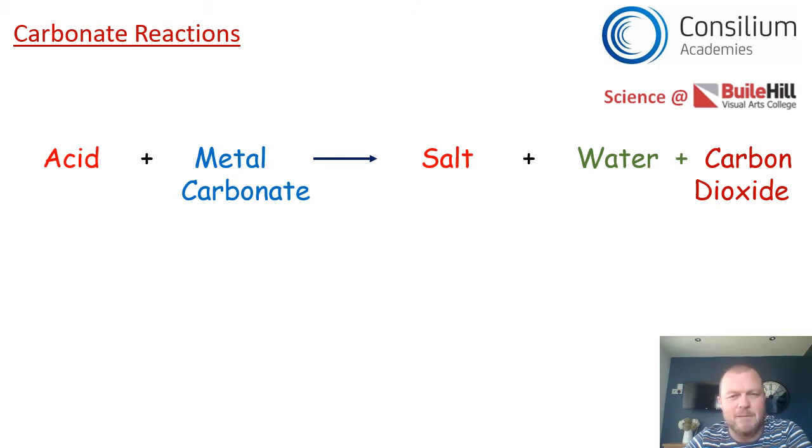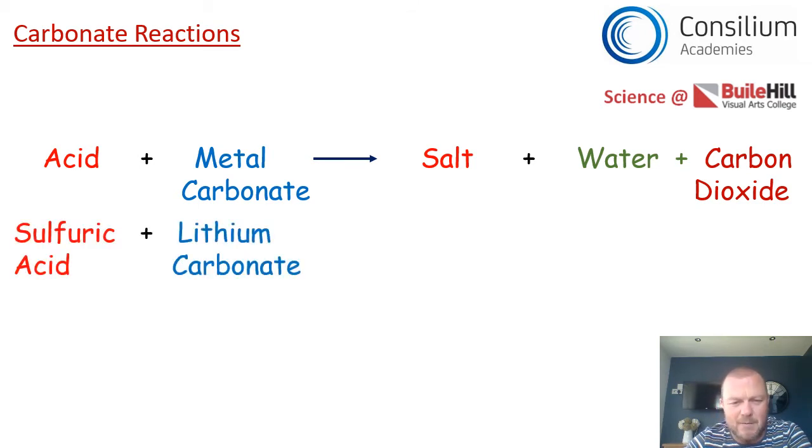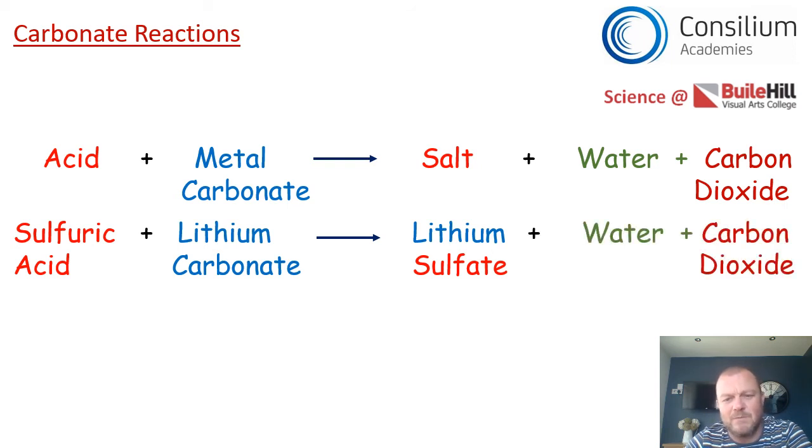Let's look at an example. Let's put an acid name and a metal carbonate name to this reaction. We'll start with sulfuric acid and lithium carbonate. The first thing you need to be able to do is predict the name of the salt. It's pretty similar to how we did it last week. The first name of the salt would be the name of the metal in the carbonate, so it would be lithium. If you remember, sulfuric becomes sulfate, so we would make lithium sulfate and we would always make water and carbon dioxide.